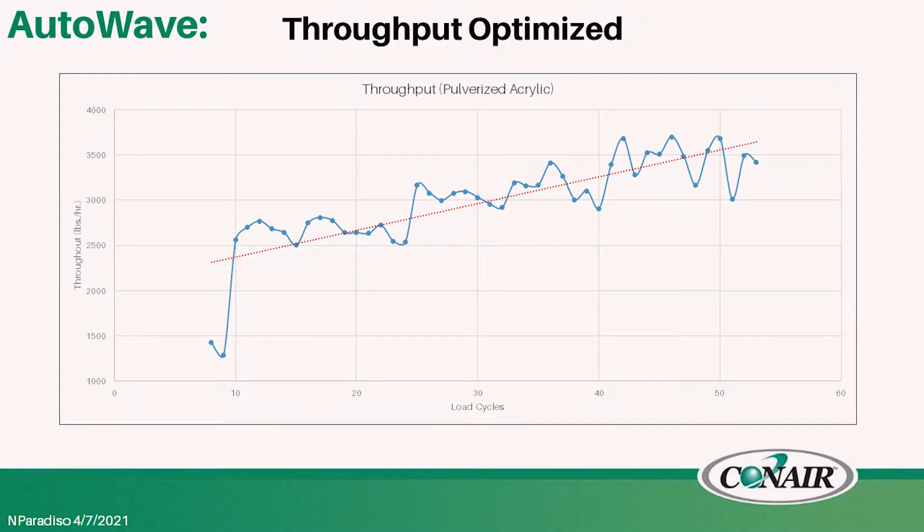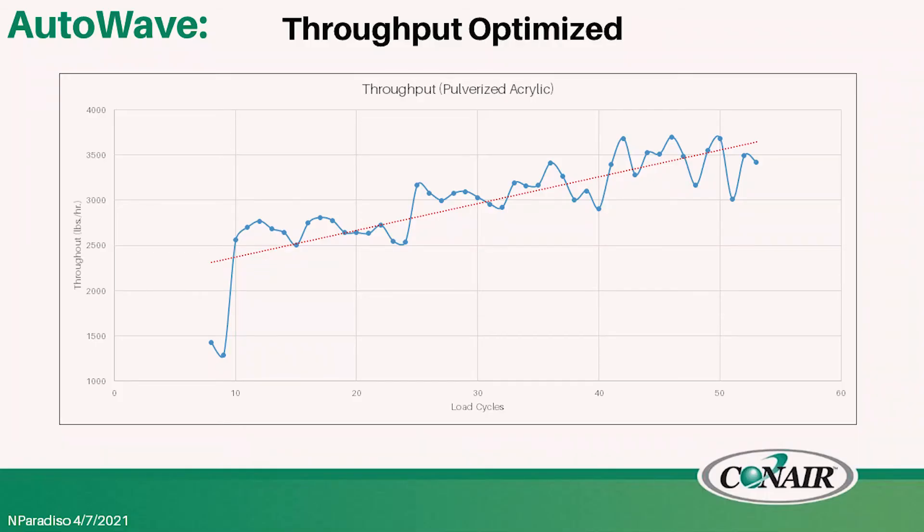What I show here is a throughput being optimized, so we've done a bunch of testing and this is just one of those examples where when a system was first put into wave stream we're able to run 2500 pounds an hour at I believe this was at a thousand feet. We show on the x-axis of this illustration load cycles and on the y-axis is throughput. As the load cycle starts to go up utilizing AutoWave technology notice how the throughput overall is being optimized.